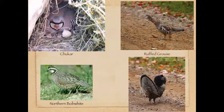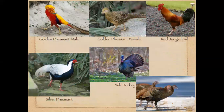Here we have the chukar, which has been introduced from elsewhere mainly as a game bird, the ruffed grouse, and the northern bobwhite, as well as more species in this group. Note the wild turkey showing both a displaying male and a female.